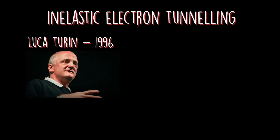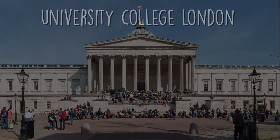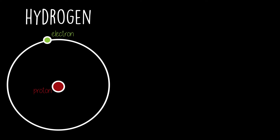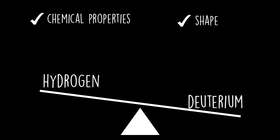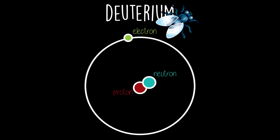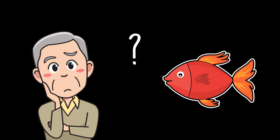The inelastic electron tunneling approach was first proposed by Leucaterin in 1996, and later shown to be consistent with known physics by Marshall Stoneham and colleagues at University College London. In 2011, scientists at MIT took an odor molecule and replaced its hydrogen by deuterium. The chemical properties and shape of the molecule remain the same, but deuterium being heavier, the molecule vibrates more slowly. Flies were reported to distinctively smell the difference, meaning they literally smell the extra neutron. The same was shown for human and fish experiments, though these studies are more controversial.